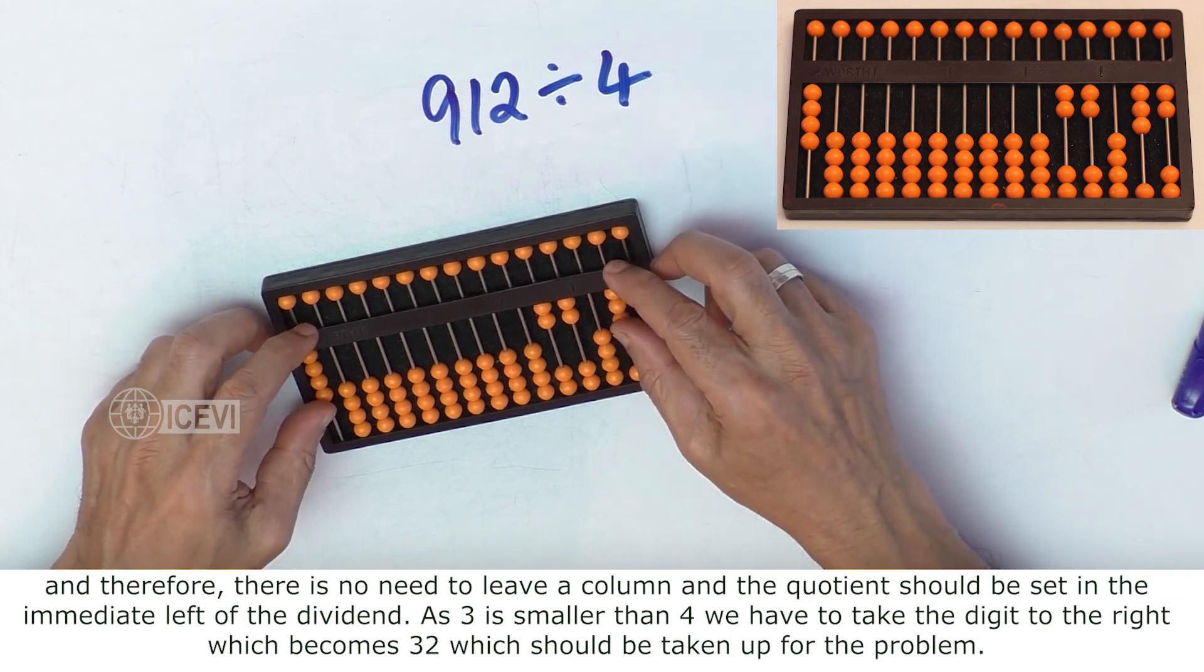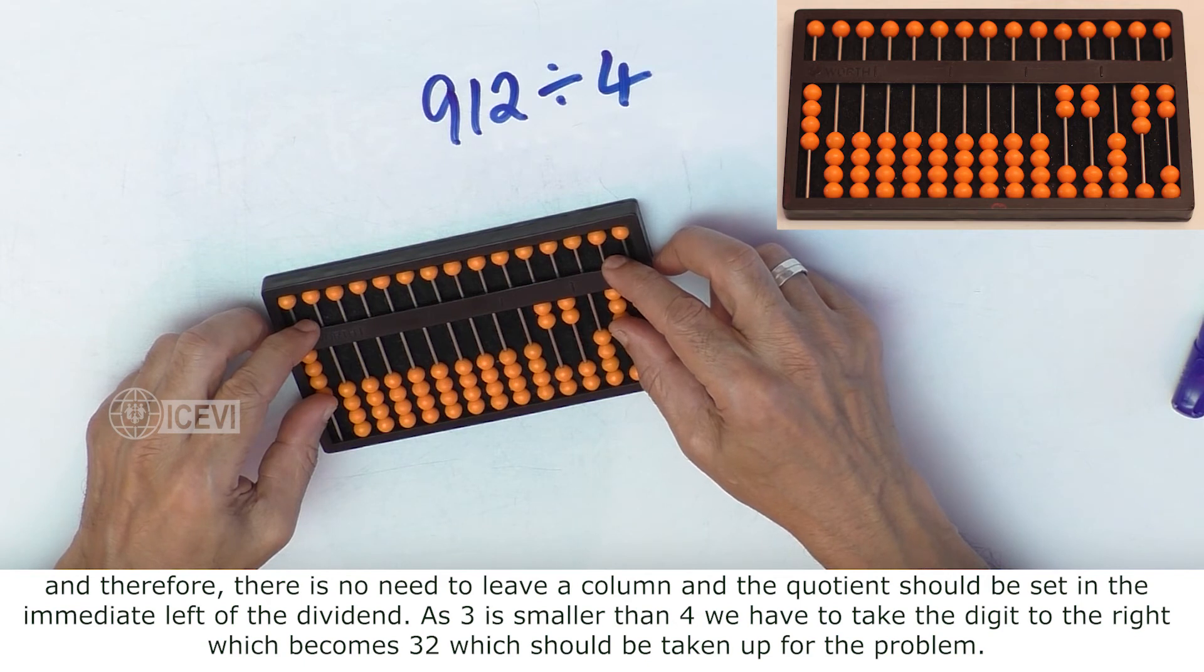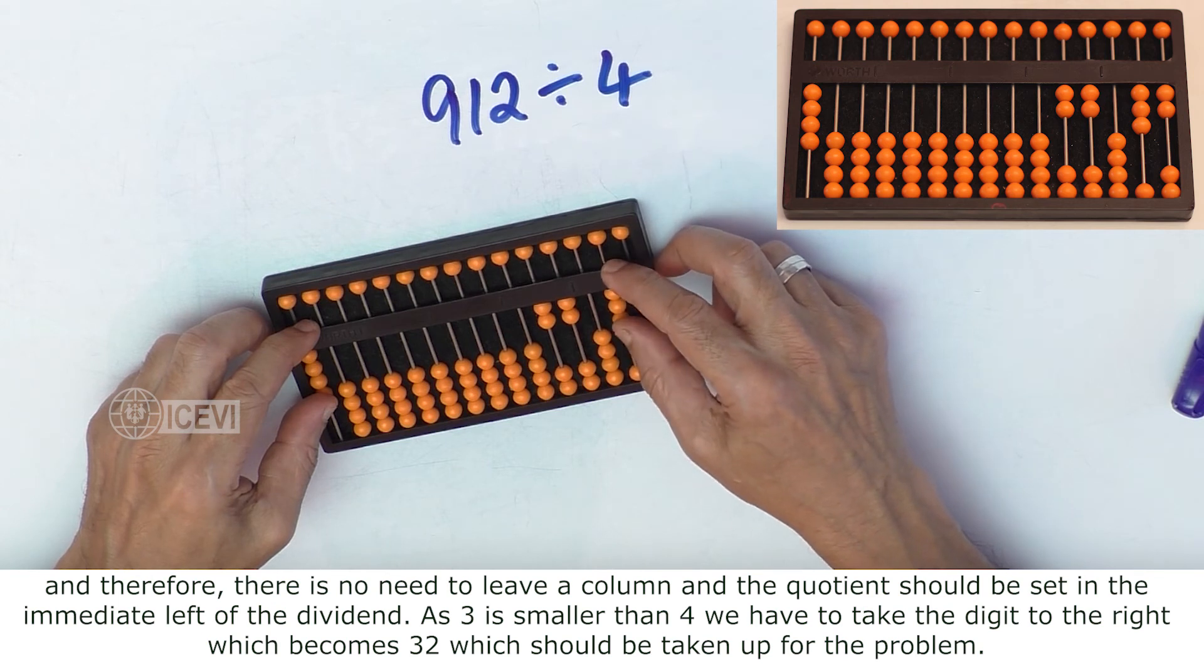And the quotient should be set in the immediate left of the dividend. As 3 is smaller than 4, we have to take the digit to the right which becomes 32 which should be taken up for the problem.